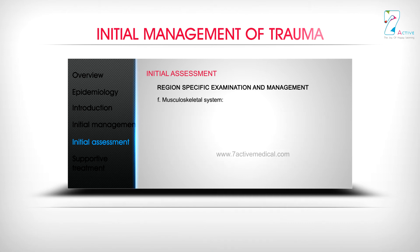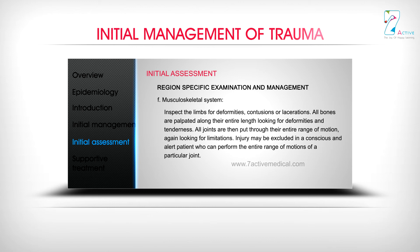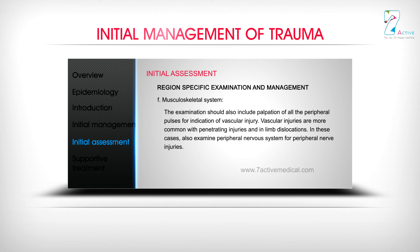For the musculoskeletal system: inspect the limbs for deformities, contusions, or lacerations. All bones are palpated along their entire length looking for deformities and tenderness. All joints are put through their entire range of motion looking for limitations. The examination should also include palpation of all peripheral pulses for indication of vascular injury. Vascular injuries are more common with penetrating injuries and in limb dislocations.